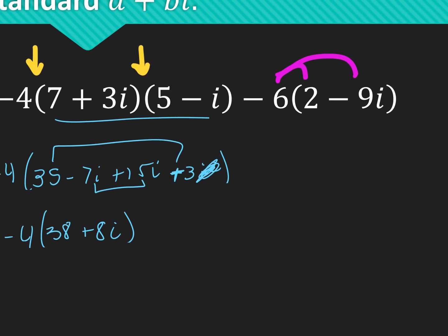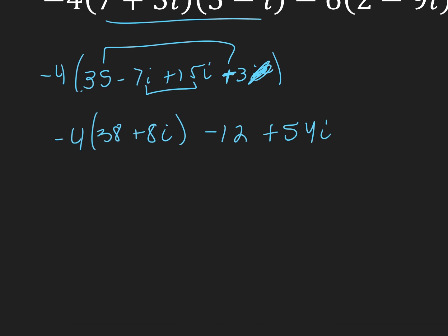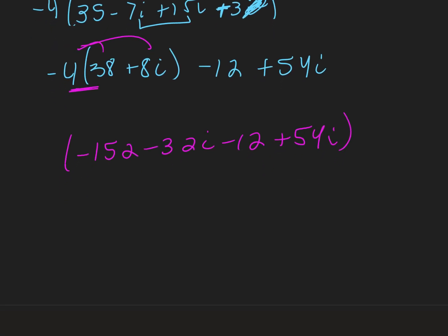Now I'm going to distribute that negative 6: negative 6 times 2 is negative 12, and negative 6 times negative 9i is positive 54i. Before I do anything else, I distribute the negative 4. Negative 4 times 38 is negative 152. Negative 4 times 8i is negative 32i. Then I have minus 12 plus 54i. Combining like terms: negative 152 and negative 12 gives me negative 164. And negative 32i plus 54i gives me plus 22i.